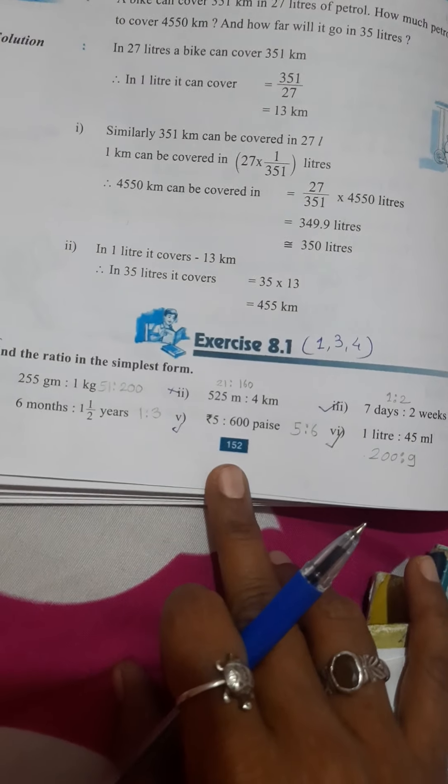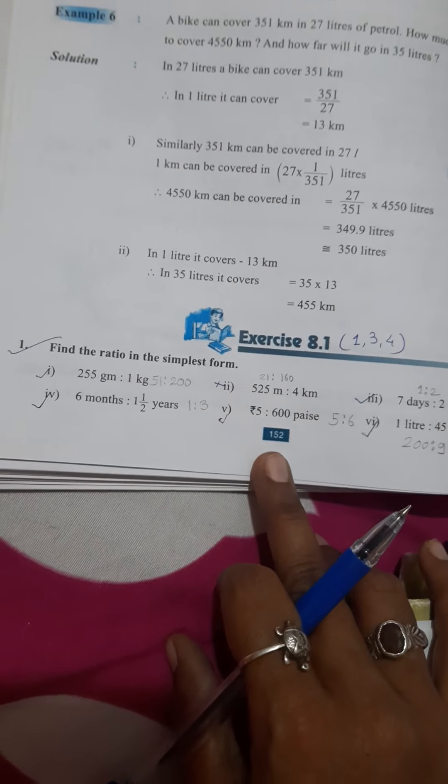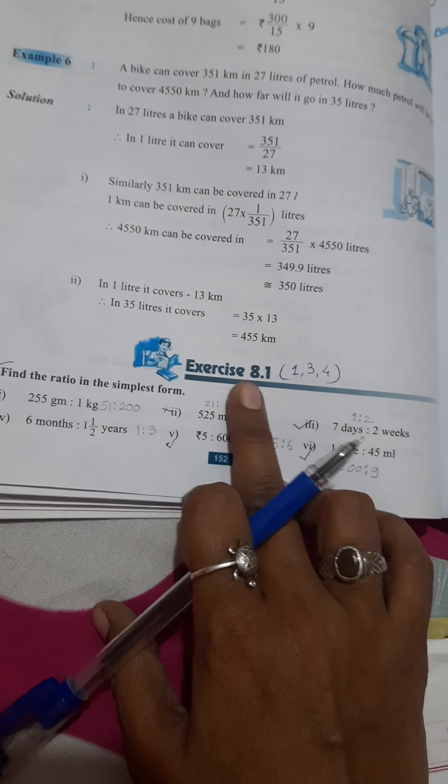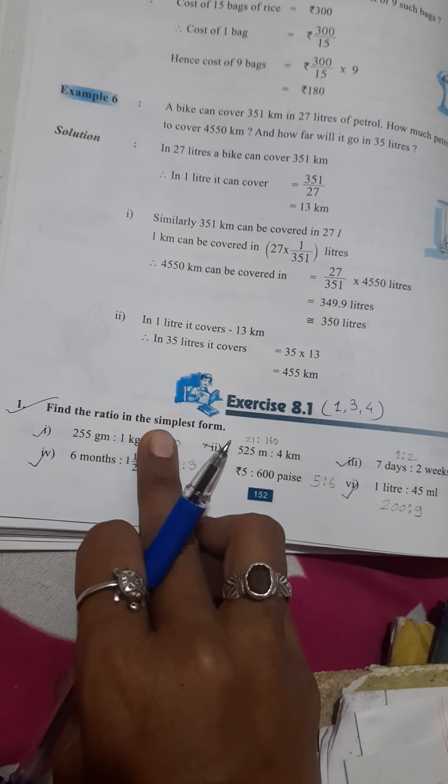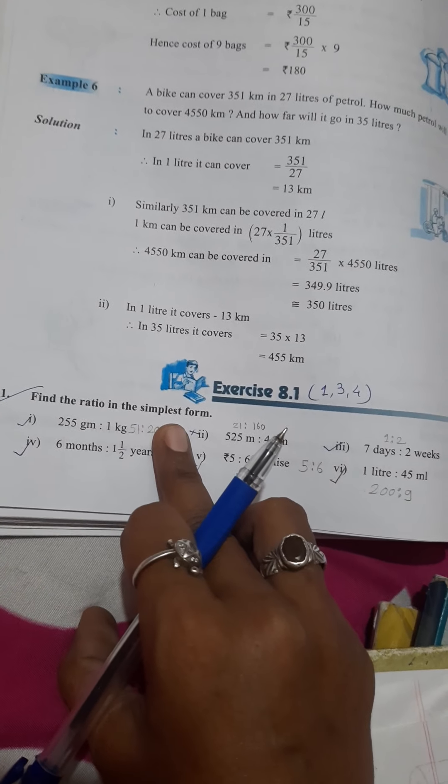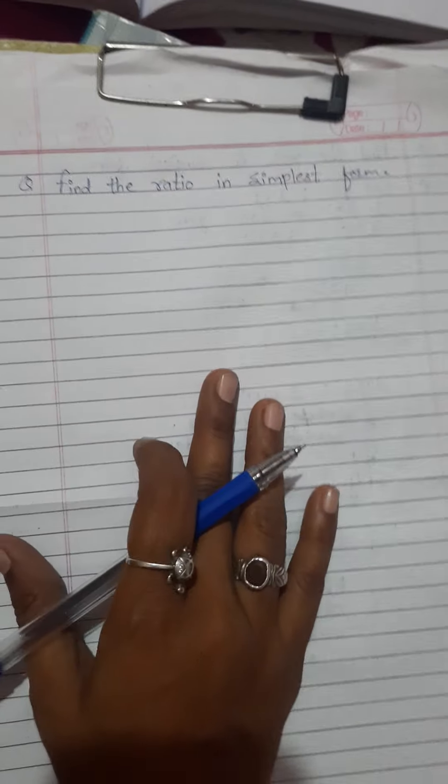Look at here, in your page number 152, there is a question number 1 in your exercise 8.1. Your question is find the ratio in the simplest form. We just solve that question here.